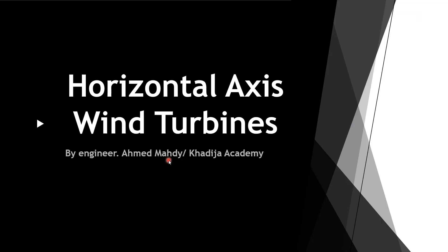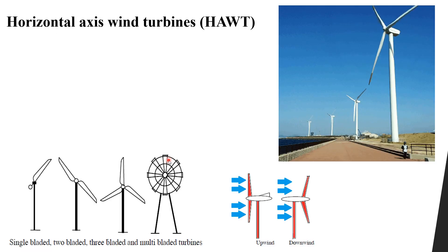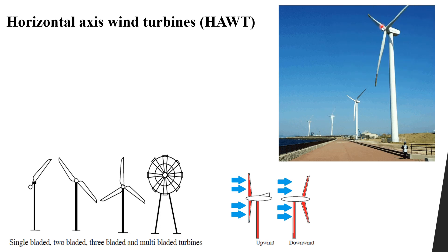Now let's look at the horizontal axis wind turbine. As you can see, it rotates around a horizontal axis. The first thing you notice is that the height here is much higher compared to the vertical axis wind turbine, and this greater height leads to higher generation of electricity.